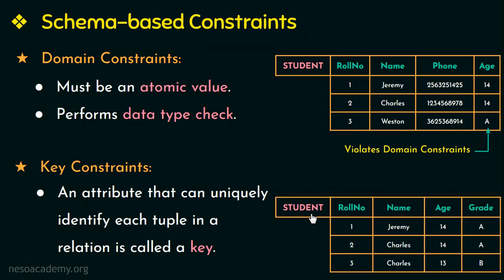For example, in the relation student, name cannot be a key because we can have two or more persons with the same name. Neither can age or grade be the key because their values are not unique. Whereas roll number can be a key because in a class no two students can share the same roll number, so we can uniquely identify each tuple. Therefore roll number is the key in this relation student, and a key is indicated by an underline under the name of the key attribute.